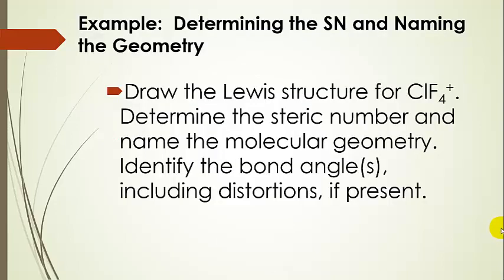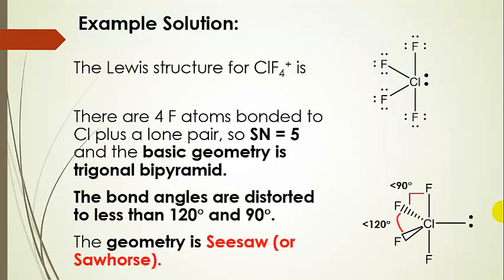Let's do an example. Pause and draw the Lewis structure, determine the steric number, identify bond angles, name it, and identify any distortions. Looking at the Lewis structure: we have four bonded atoms plus a lone pair, so the steric number is five and the basic geometry is trigonal bipyramid. We place the lone pair in an equatorial position, leaving four bonded fluorines — two in equatorial positions and two in axial positions. The bond angles are squeezed to less than 90 and less than 120 degrees for the equatorial atoms. The geometry is called a seesaw or alternatively a sawhorse.